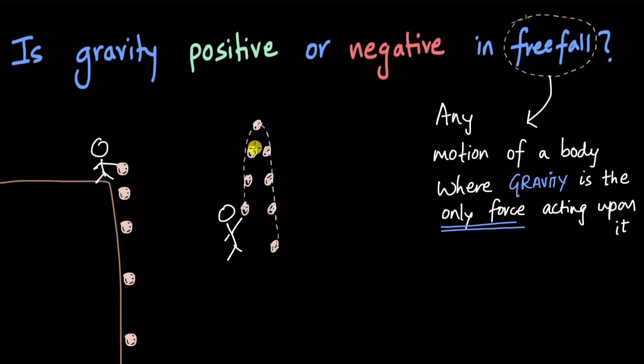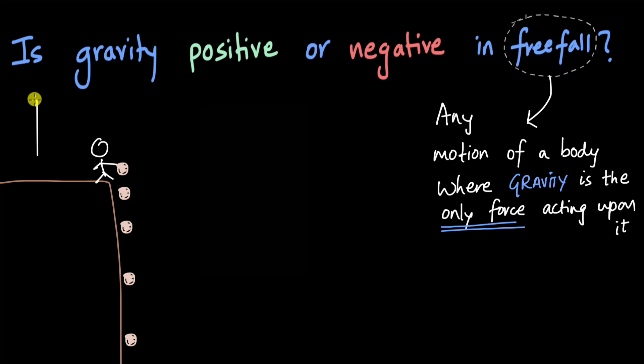The sign of acceleration due to gravity only depends on which direction you take as positive and which direction you take as negative. So for this case, let's say we take the upward direction as the positive direction.